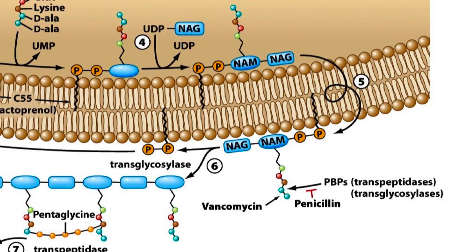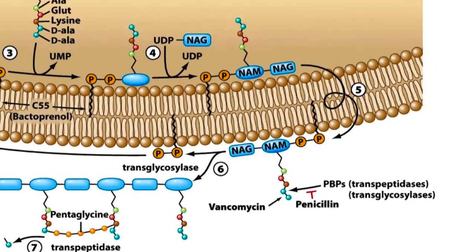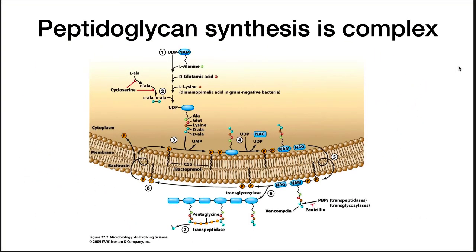Cell wall synthesis is a target of many antibiotics. Since we don't synthesize the cell wall, humans do not have any of the enzymes of the pathway. The figure lists several antibiotics and where they have their effect. Note especially the activity of penicillin. Penicillins inhibit the transpeptidation reaction and prevent the cell wall from forming.